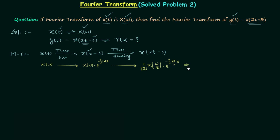We can write the Fourier transform Y(ω) = (1/2) · X(ω/2) · e^(-jω·3/2), where 3 divided by 2 equals 1.5. So this is the answer — this is the Fourier transform of signal y(t) using Method 1. Now we will move forward to Method 2.